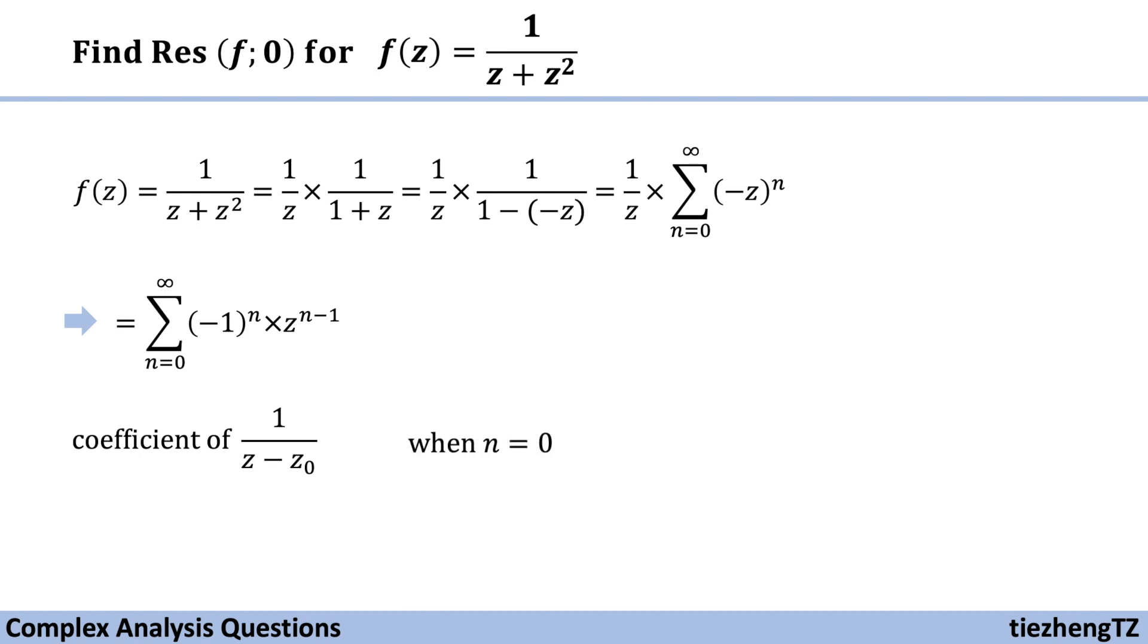And we know when n = 0, we have z⁻¹, which is 1/z. And the coefficient is (-1)ⁿ. With n = 0, this becomes (-1)⁰ = 1.